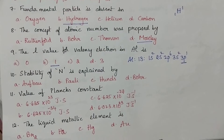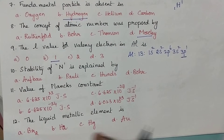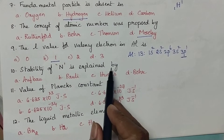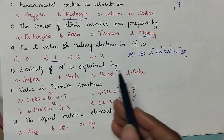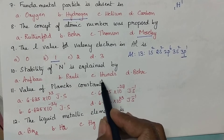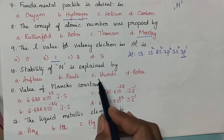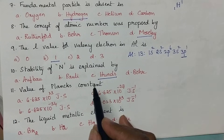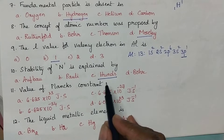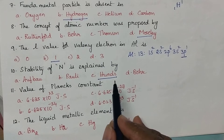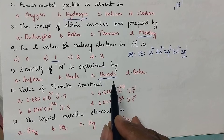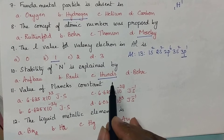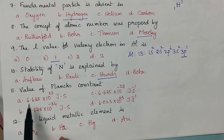The stability of nitrogen is explained by: according to Hund's principle, elements with half filled and completely filled configuration are highly stable.